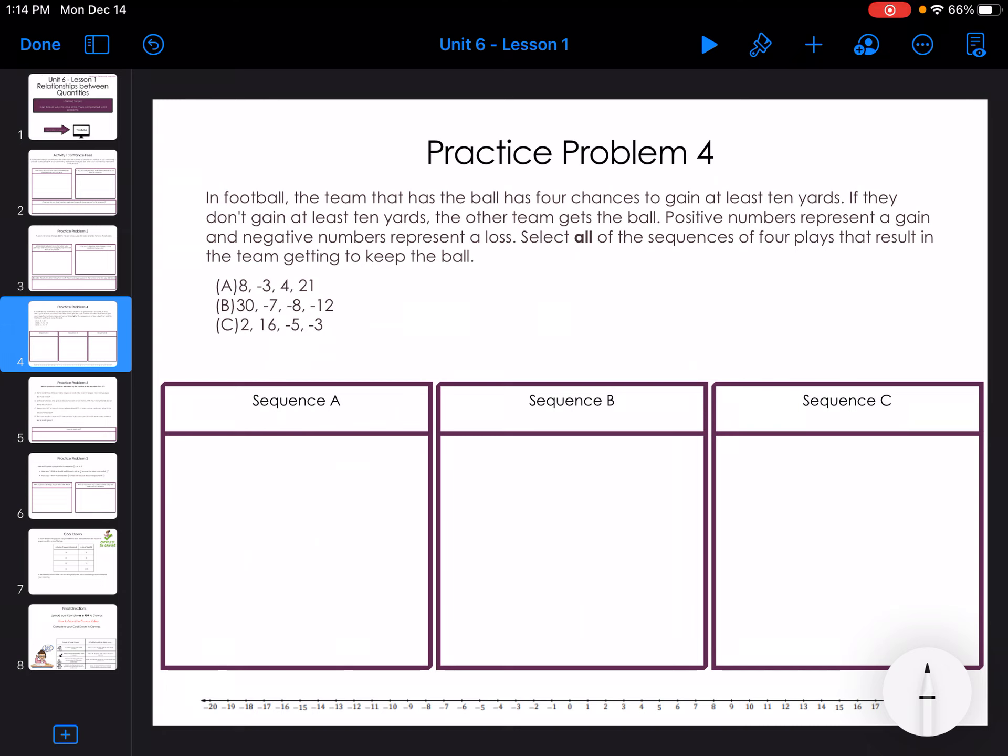For the next one, in a football team, the ball has four chances to gain at least 10 yards. If they don't gain at least 10 yards, the other team gets the ball. Positive numbers represent a gain and negative numbers represent a loss. Select all the sequences of four plays that could result in the team getting to keep the ball.